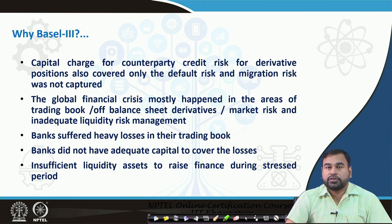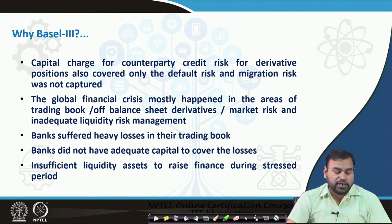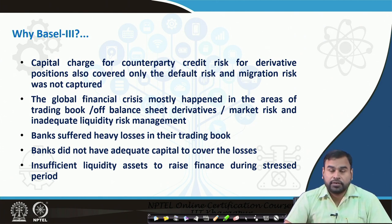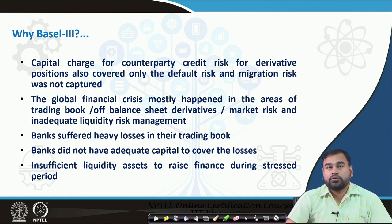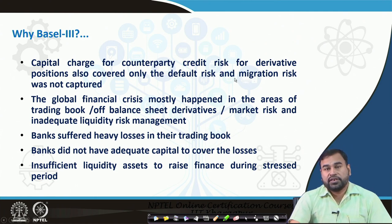The most important factor responsible for the global crisis was the liquidity problem, and the liquidity aspect was not given due consideration in Basel 2. Banks suffered heavy losses in the trading book and did not have adequate capital to cover those losses whenever a crisis took place. Insufficient liquid assets to raise finance during stressed periods was also a problem — the liquid assets were not sufficient to cover up the liquidity positions.